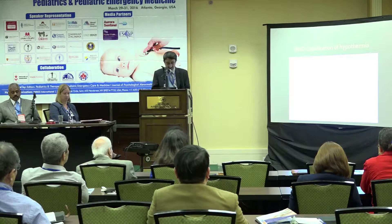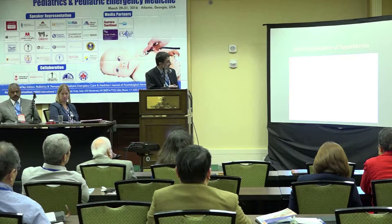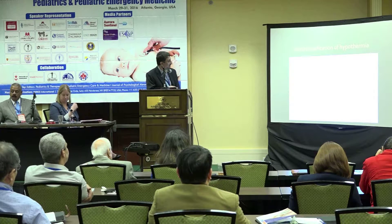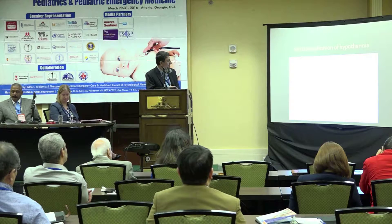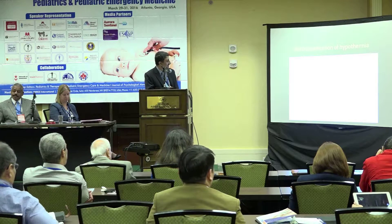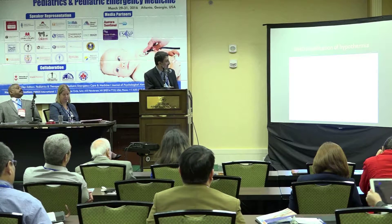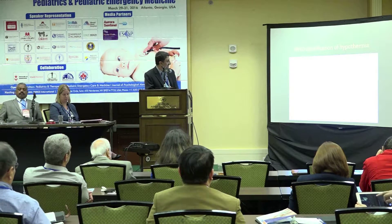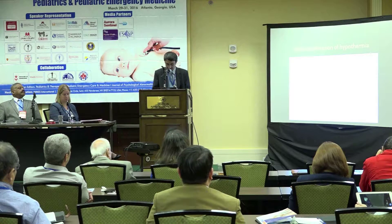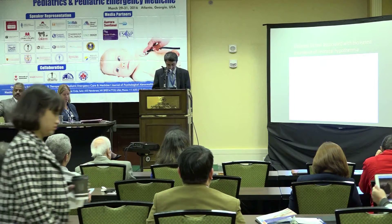A few words about the WHO classification of hypothermia: normal temperature means axillary temperature from 36.5 to 37.5 degrees centigrade. Mild hypothermia is 36 to 36.5 degrees centigrade. Moderate hypothermia is between 32 and 35.9 degrees centigrade. Severe hypothermia means below 32 degrees centigrade. This is the classification we are going to follow.